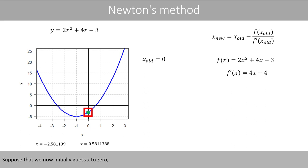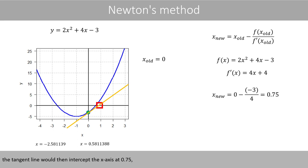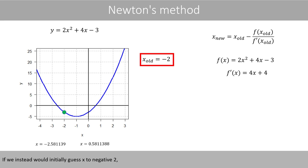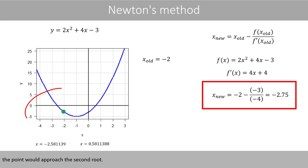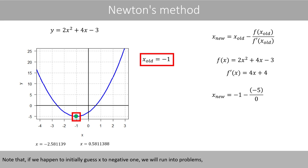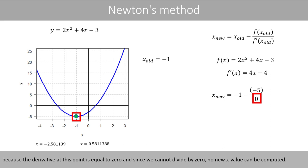Suppose that we now initially guess x to 0. The tangent line would then intercept the x-axis at 0.75, which means that the point will move on the curve to the x-coordinate 0.75. In the next iteration, the point will go back like this. If we instead initially guess x to negative 2, the point would approach the second root. If we continue to iterate, we will obtain the second root. Note that if we happen to initially guess x to negative 1, we will run into problems, because the derivative at this point is equal to zero, and since we cannot divide by zero, no new x-value can be computed.